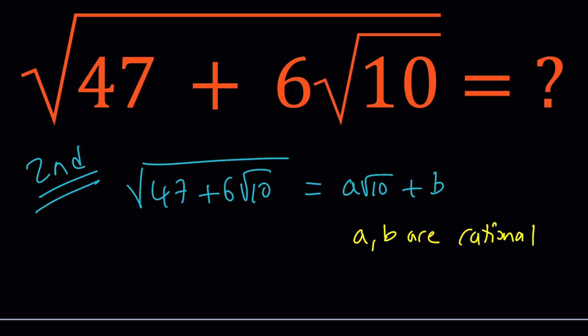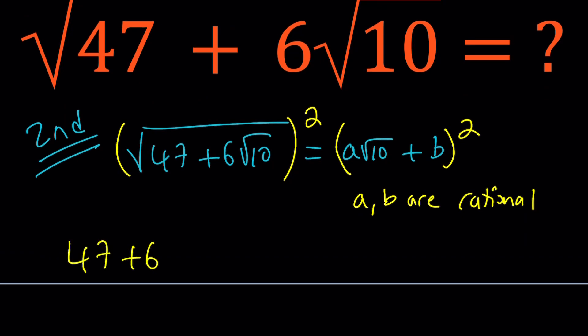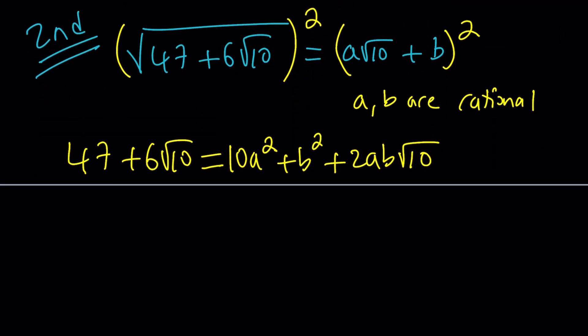Let's see how this goes. So we're going to go ahead and square both sides. If you square the left-hand side, it's going to give you the expression inside. And the right-hand side, if you square a√10, you get 10a², if you square b, you get b², and for 2ab or 2xy, you're going to get 2ab√10. So our goal is to find rational numbers a and b that satisfy this equation.